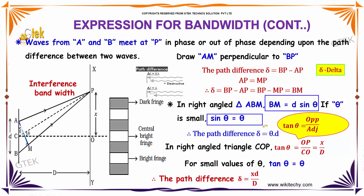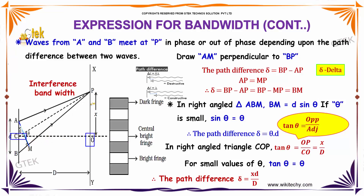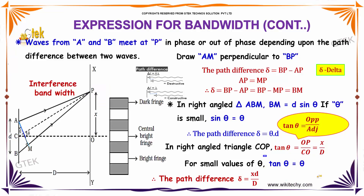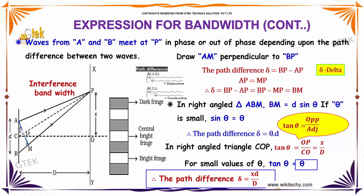If theta is small, sin theta approximately equals theta. The path difference becomes delta equal to theta times d. For the right angle triangle COP, tan theta equals OP divided by CO, which is x divided by D. For small values of theta, tan theta approximately equals theta. So the path difference is given by delta equal to x times d divided by D, by substituting theta equal to x divided by D.